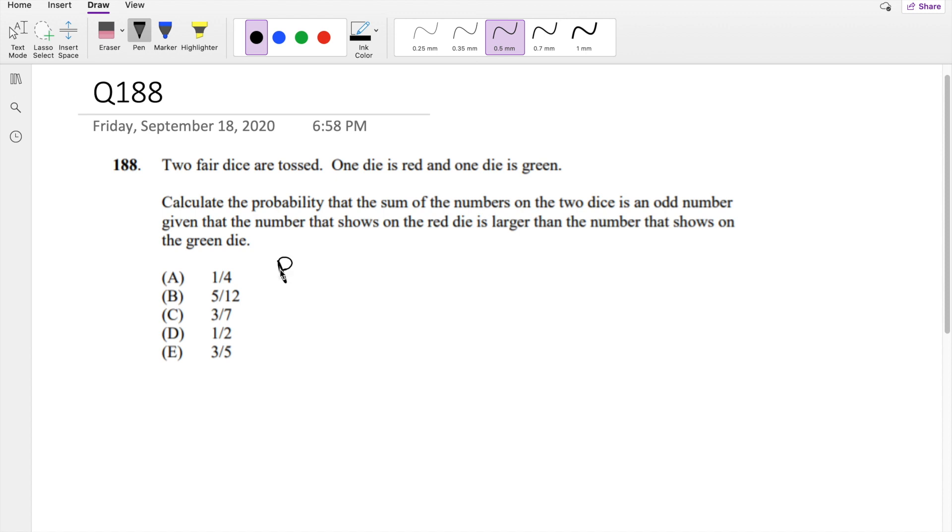They're asking for what is the probability that the sum of the two dice numbers, so red plus green, given that the number shown on the red die is greater than the number shown on the green die. So given R is greater than G.